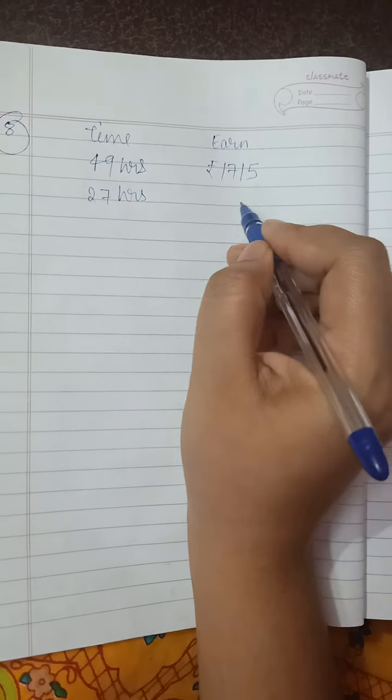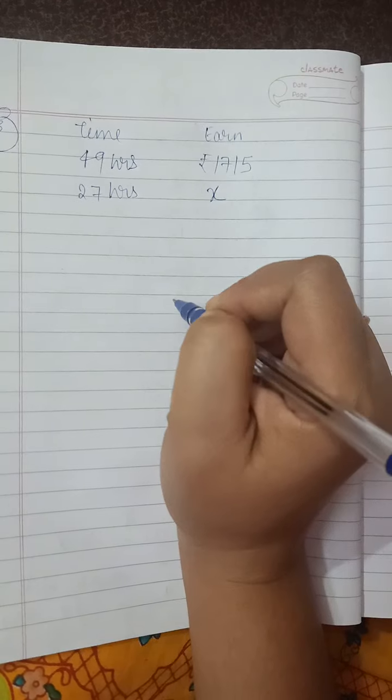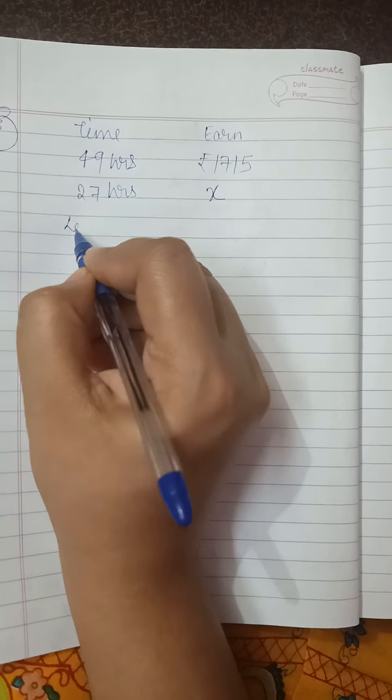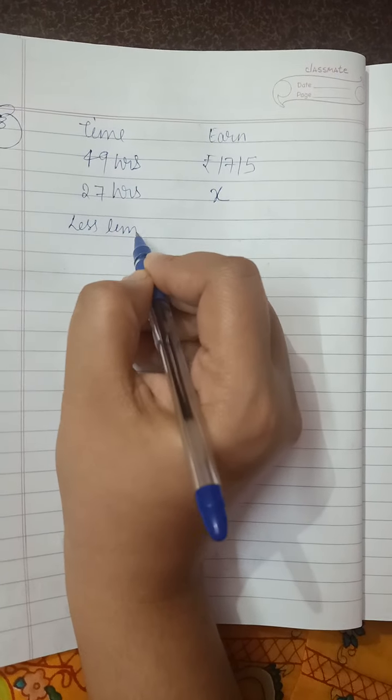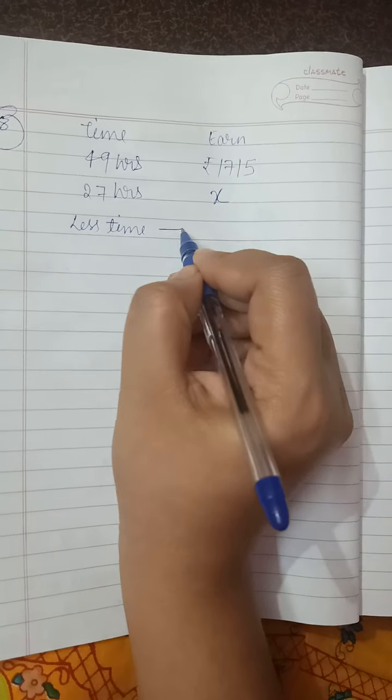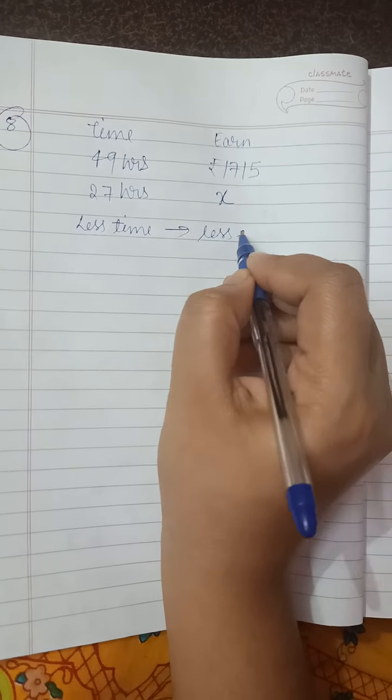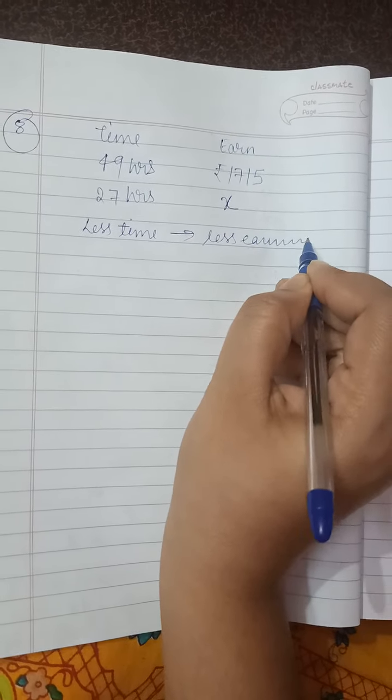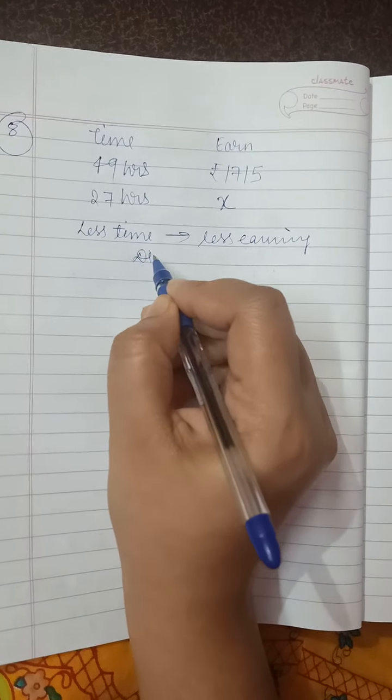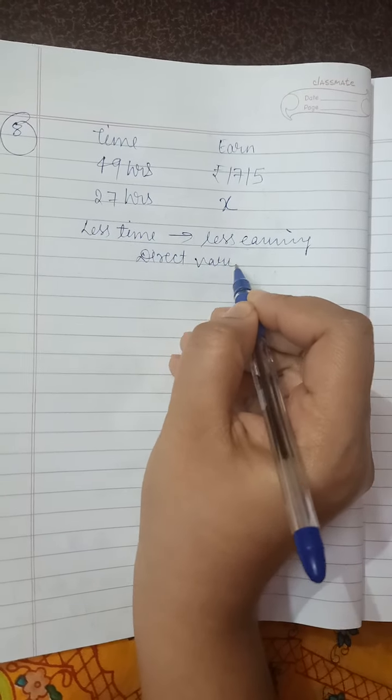Time and earning is given. He is working 49 hours and getting rupees 1750. How much will he get in 27 hours? Let earning be x. Less time, less earning, so it is direct variation.